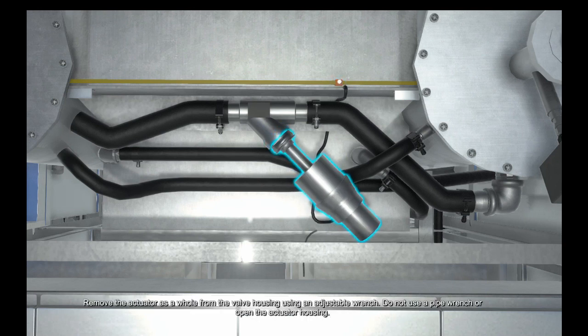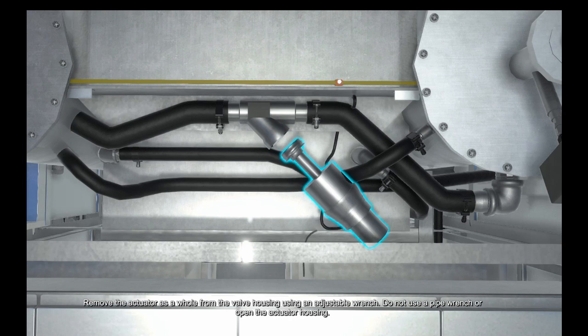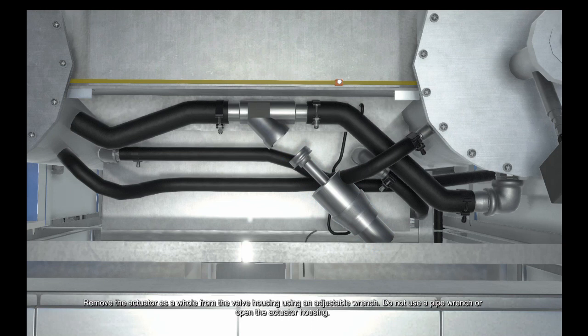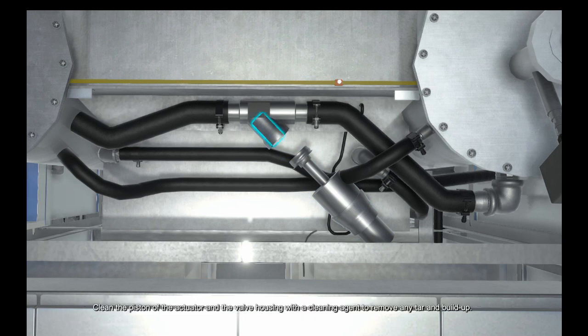Remove the actuator as a whole from the valve housing using an adjustable wrench. Do not use a pipe wrench or open the actuator housing. Clean the piston of the actuator and the valve housing with a cleaning agent to remove any tar and buildup.